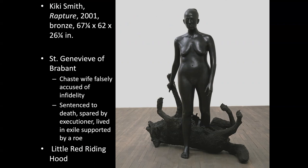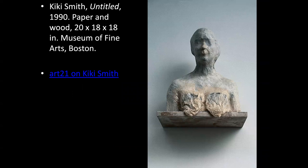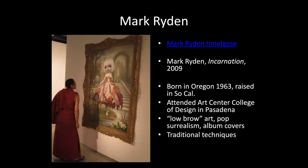This one's called Rapture, and she talks about why she's really interested in Saint Genevieve of Brabant. Like a lot of Christian or Catholic saints, Saint Genevieve was a legendary type of person — a chaste wife who was falsely accused of infidelity. She was sentenced to death and spared by her executioner, and lived in exile being supported by a roe, which is a baby deer. The story mixes together Saint Genevieve with Little Red Riding Hood, showing her emerging out of the husk of a wolf. This piece is very similar to one you can see at the Detroit Institute of Art.